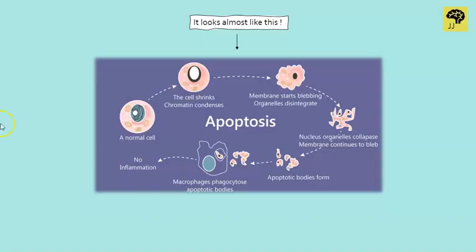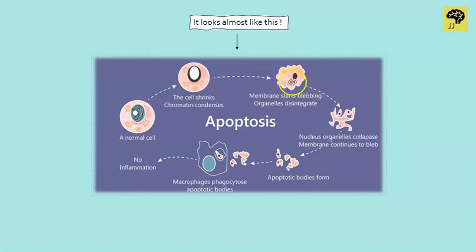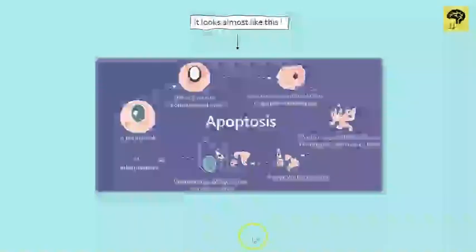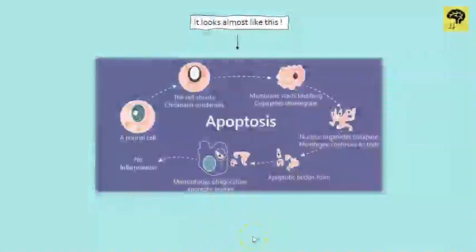This normal cell shrinks into a very small piece, chromatin condenses (pyknosis), the membrane blebs, and organelles disintegrate. Small membrane-bound apoptotic bodies are produced — compartments containing cytoplasm and some organelles. These apoptotic bodies are then engulfed by macrophages. There is no trace of any cell left, and crucially, there is no inflammation. It is a very tidy process — thousands of cells undergo apoptosis daily, and we never even notice.